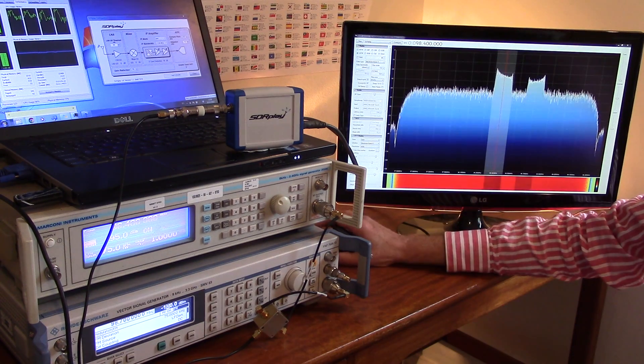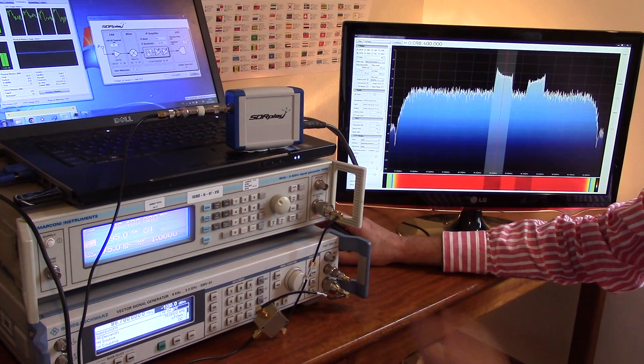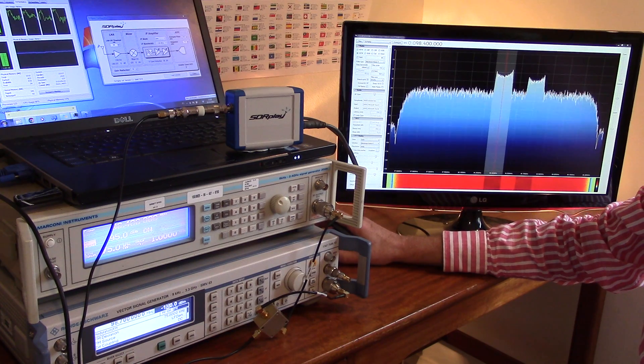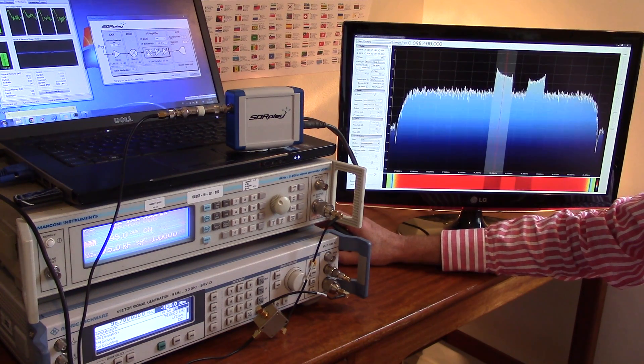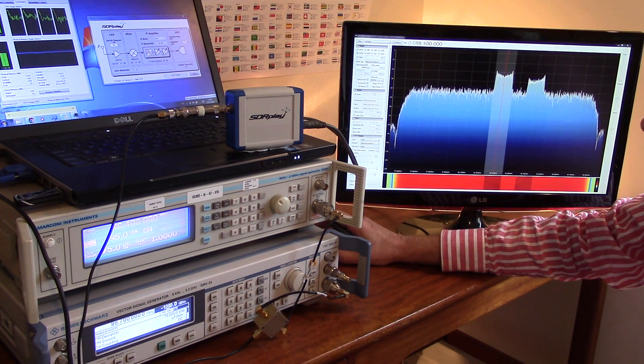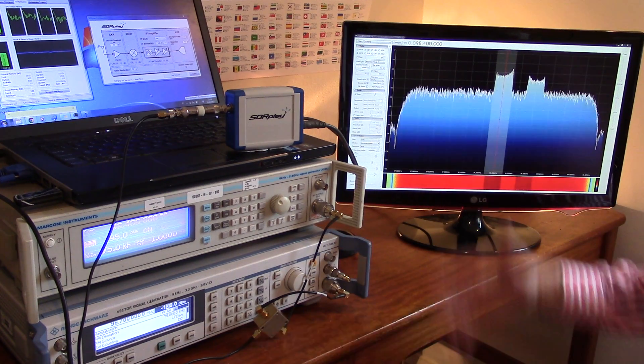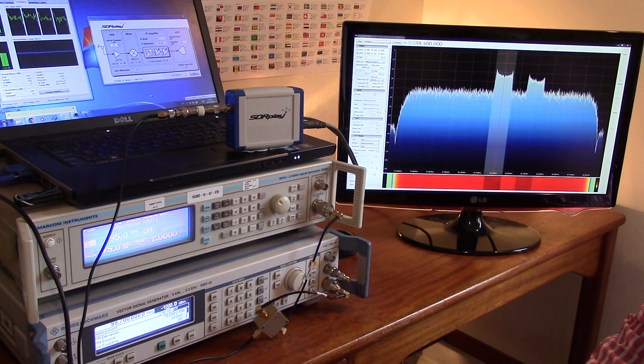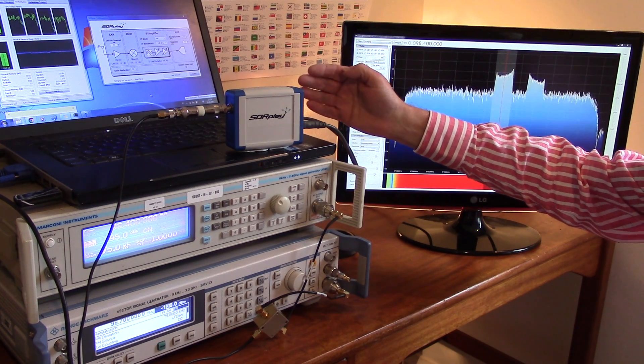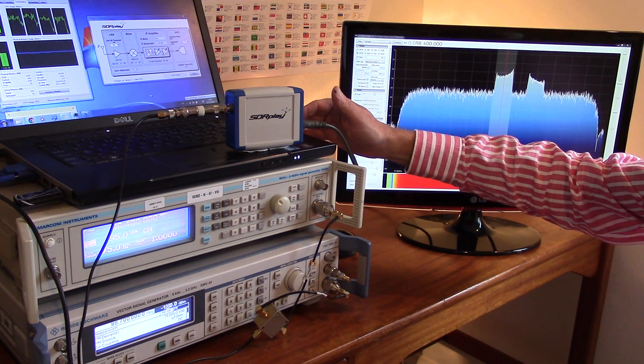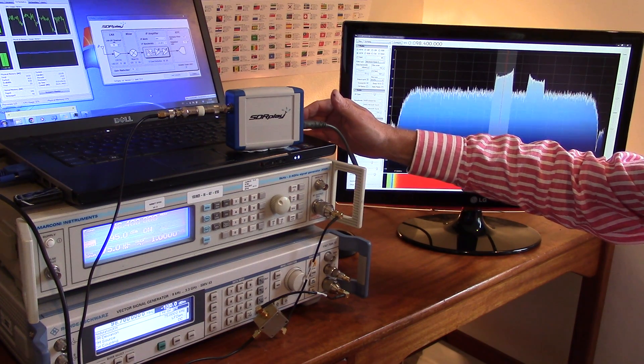Hi, we're looking today at the performance of the RSP in the presence of an unwanted blocking signal on the FM broadcast band. For the demonstration here we've got the RSP connected to a Windows 7 PC running SDR sharp.